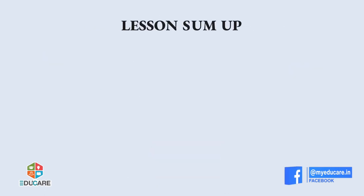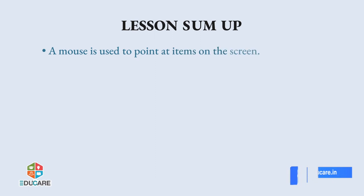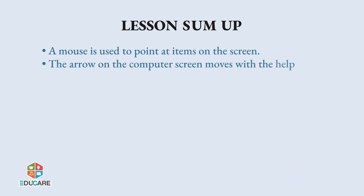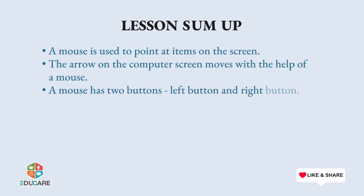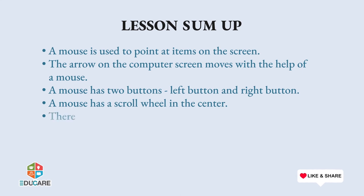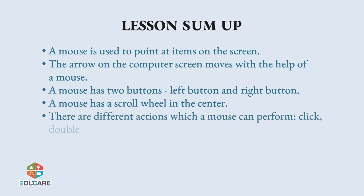Lesson sum up: A mouse is used to point at items on the screen. The arrow on the computer screen moves with the help of a mouse. A mouse has two buttons — left button and right button. A mouse has a scroll wheel in the center. There are different actions which a mouse can perform: click, double click, right click, and drag and drop.